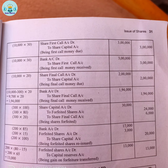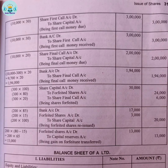The share value forfeited: 300 into Rs.80 = Rs.24,000 credited to forfeited shares account. Rs.200 is credited. Forfeited shares and share final call entries completed. For reissue: bank account debit, forfeited shares account debit, to share capital account. 200 shares are reissued.